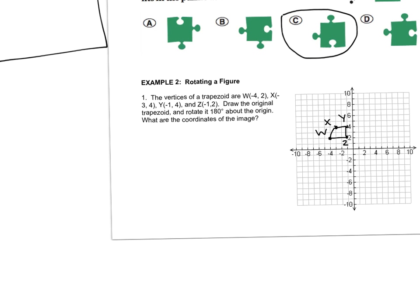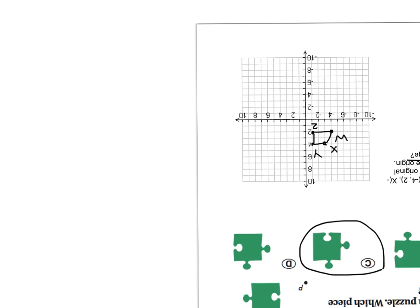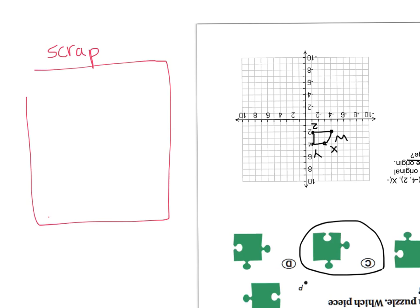Now I'm going to rotate my paper 180 degrees. When we rotate 180, it lands the paper upside down, so it doesn't matter which direction you go — clockwise or counterclockwise — because 180 degrees lands in the same spot. 180 has the exception of not needing to tell you the direction. Rotate your paper with me 180 degrees, then grab that scrap paper and sketch a picture of the coordinate grid, because my picture was on the coordinate grid and I need to know where the new points will land.